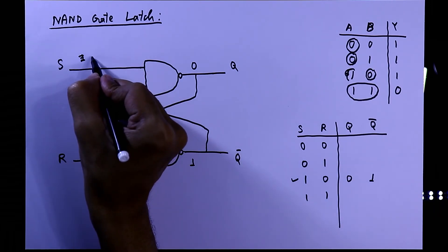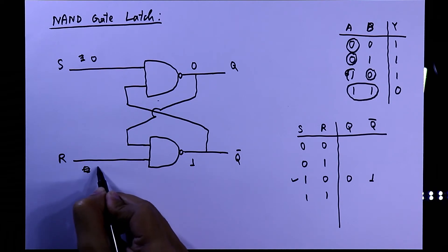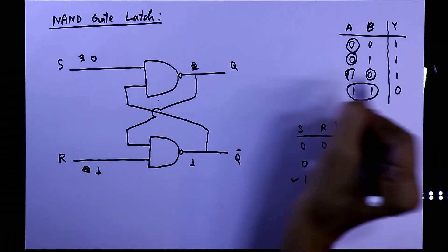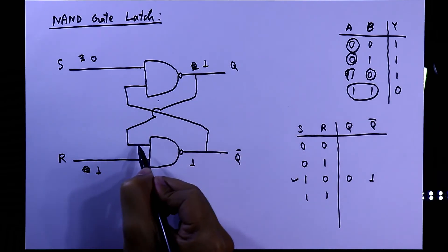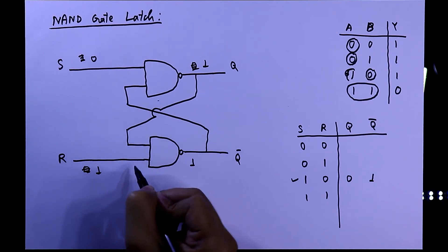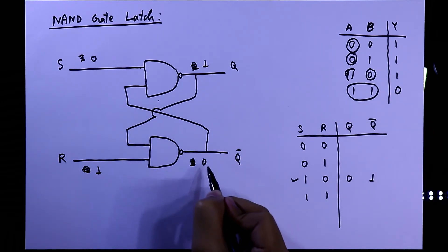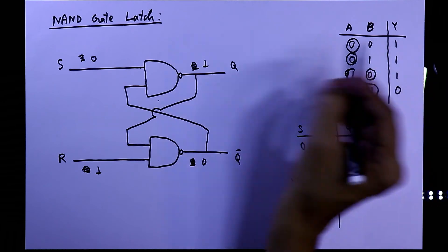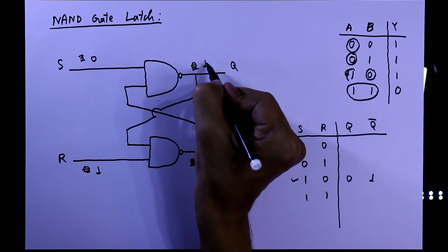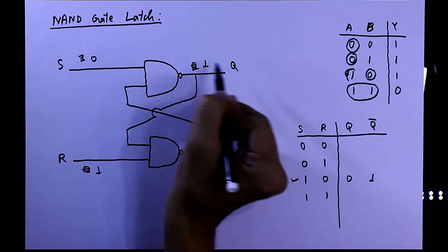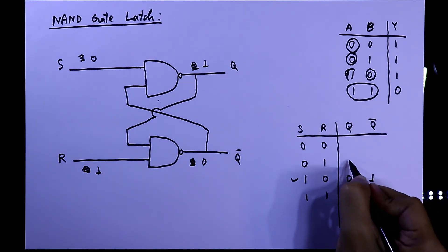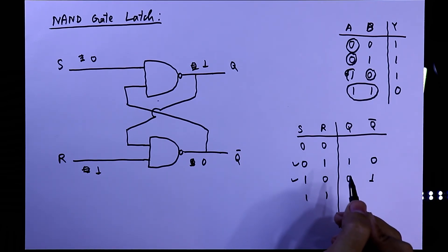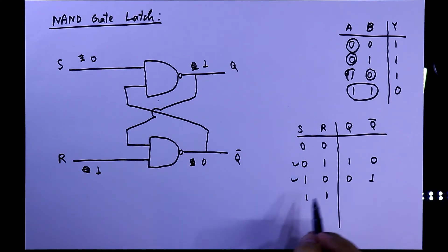When S=0: any input of 0 gives output 1, so the first gate outputs 1. This 1 goes to the second gate; with both inputs 1, the output is 0. That 0 feeds back; any input of 0 gives output 1. So when S=0, Q=1 and Q-bar=0. The NAND latch does the opposite of the NOR SR latch.